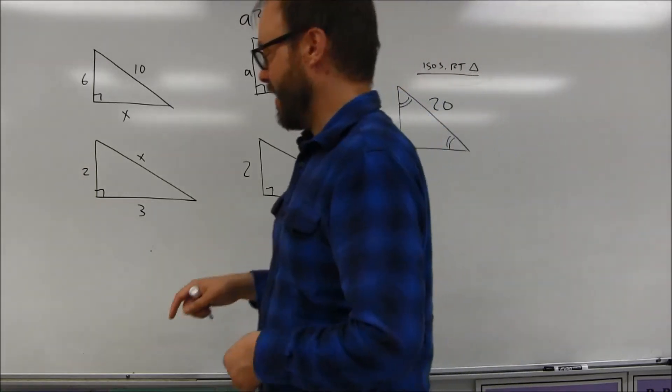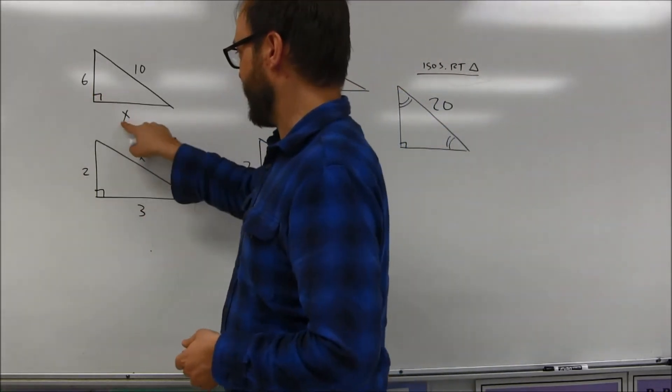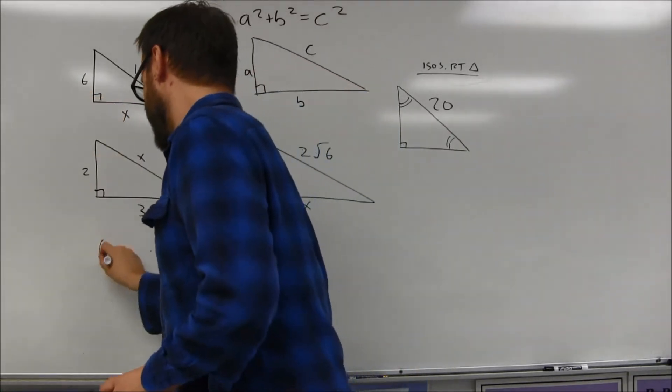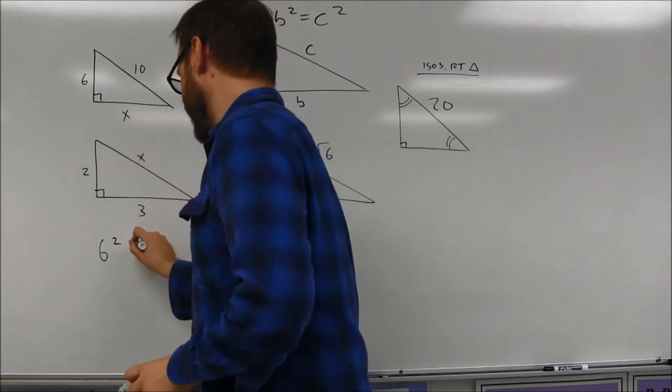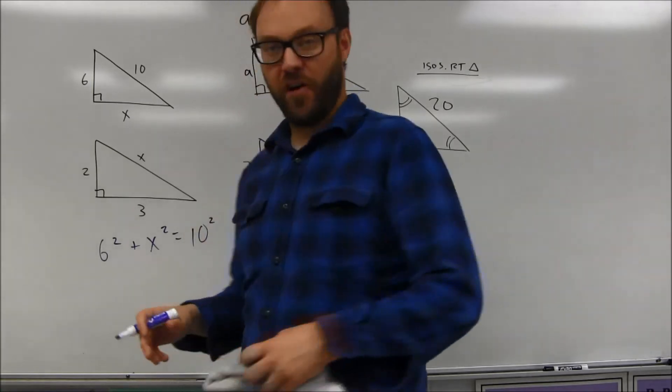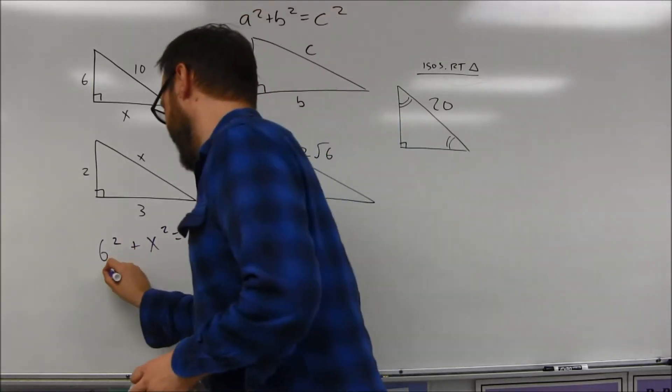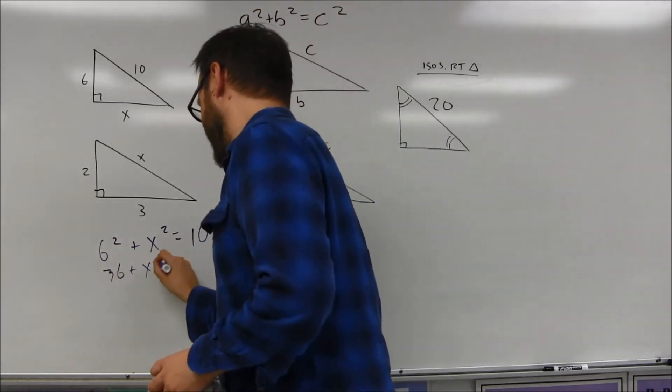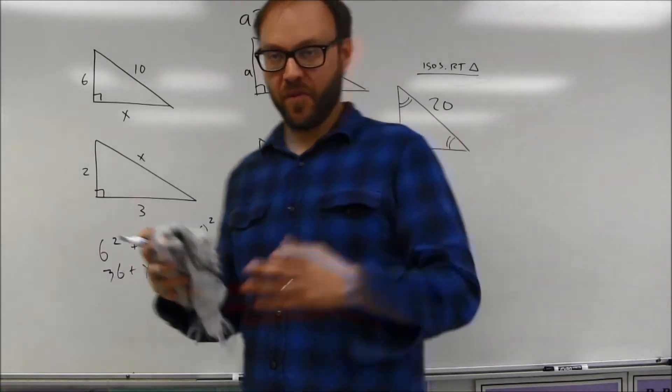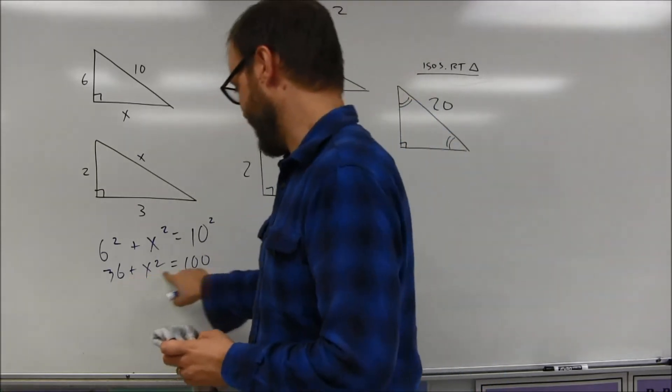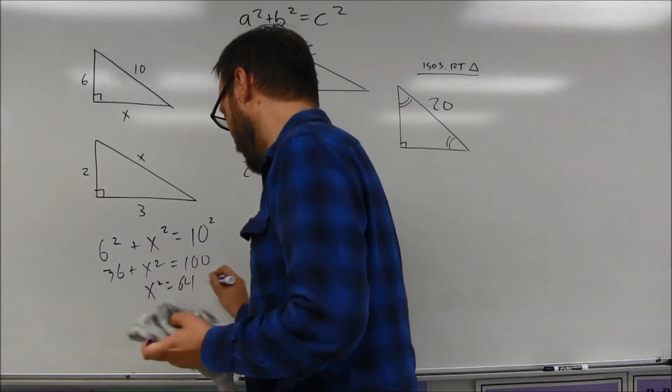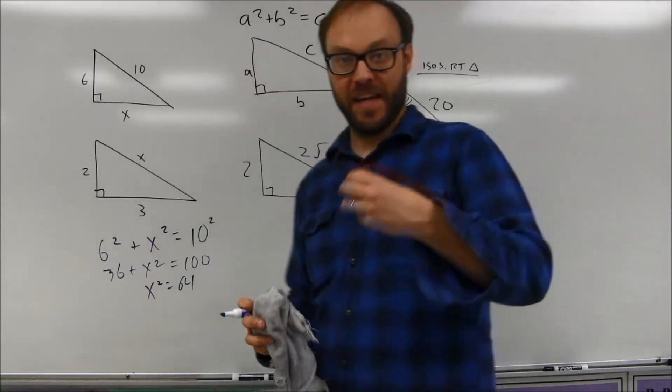For example, here we've got a triangle. We can basically fill the numbers into the Pythagorean Theorem. The leg squared plus the leg squared is equal to the hypotenuse squared. And you can just solve that little equation. We're going to get 36 plus x squared is equal to 100. And sometimes you're going to have to do a little bit of equation solving. In this case, I can subtract 36 from both sides of the equation. I get x squared is equal to 64. And that missing side is going to be 8.